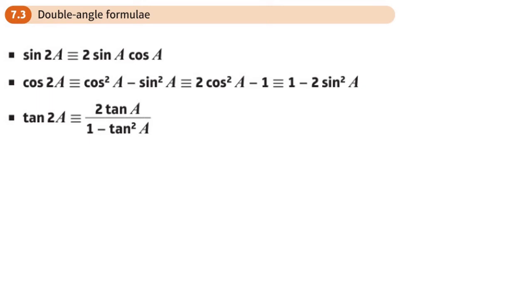Okay, third section of chapter 7 trigonometry and modeling. Here we're looking at the double angle formulae. Now these can be derived by the addition formulae by replacing b with a.